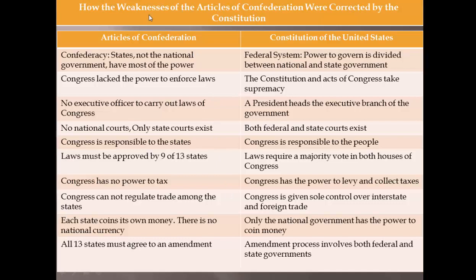We need to look at the weaknesses of the Articles and how the Constitution corrected them. Under the Articles, states had more power than the national government — that was a problem. The thing at the top needed more power. The fix: our federal system today divides power between the national and state levels, with the national or federal level having more power than the states.